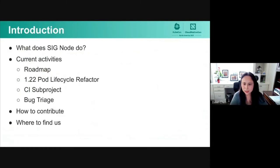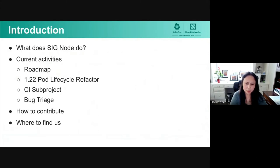Here's today's agenda. We are going to first introduce SIG Node's responsibility, then talk about current activities and the roadmaps for 1.22 and 1.23. Then we'll discuss some interesting projects and efforts currently driven by SIG Node, for example the 1.22 pod lifecycle refactoring and the CI subproject. Finally, we'll talk about bug triage strategies and how to get involved and get help.